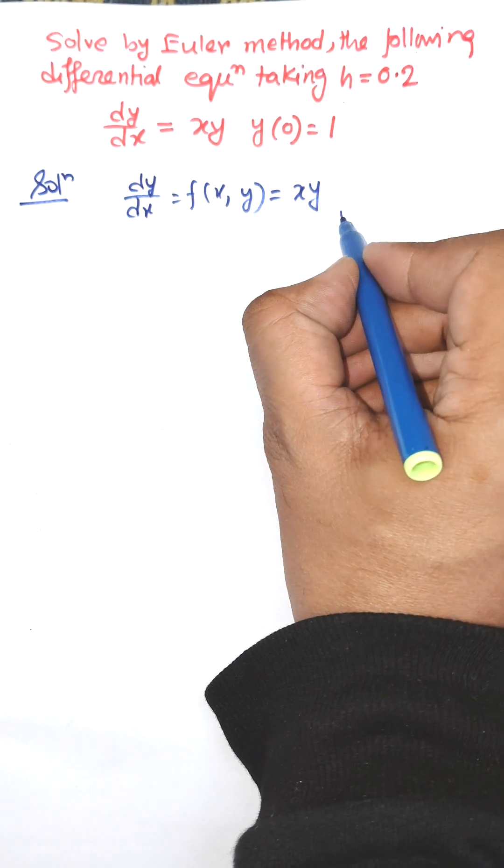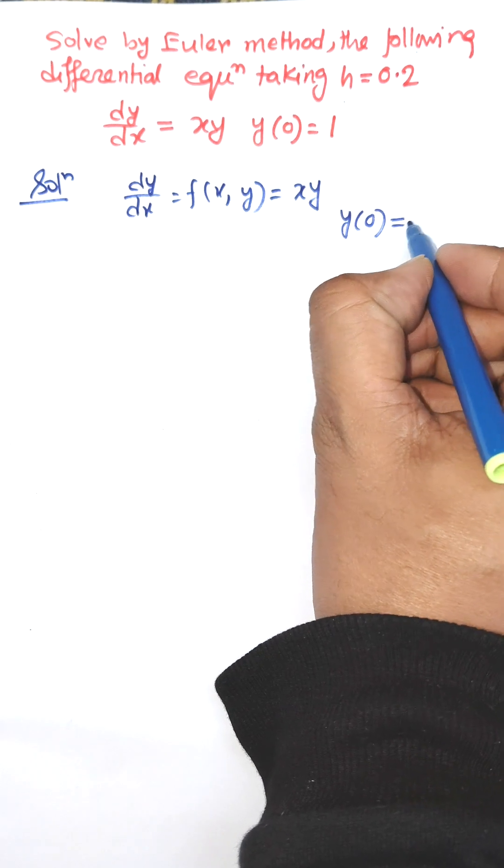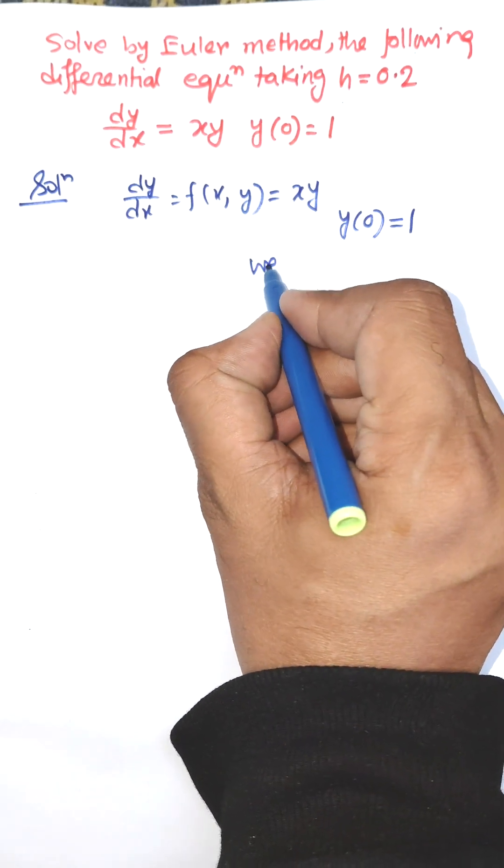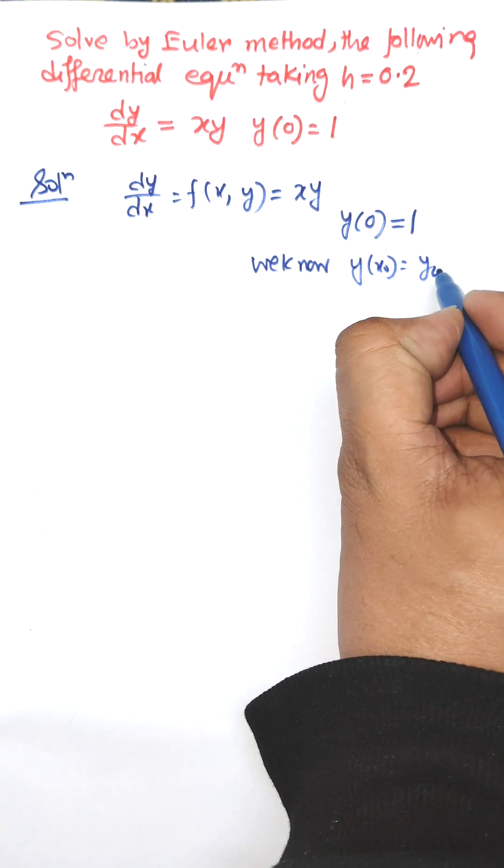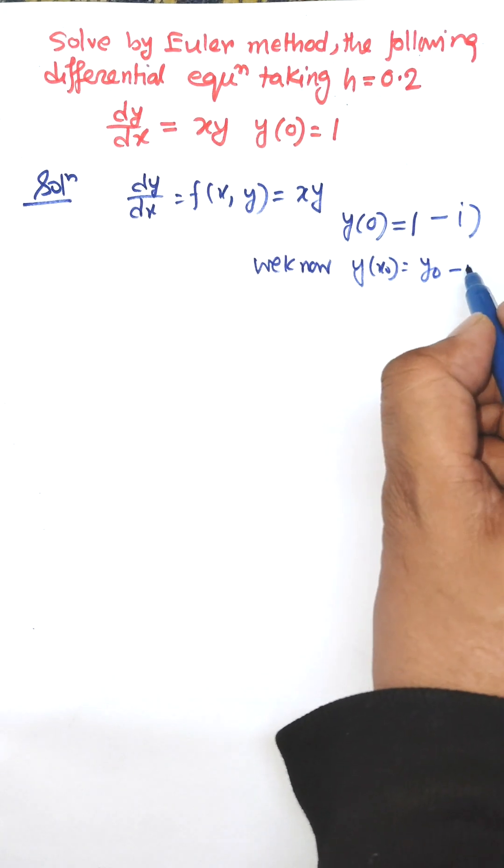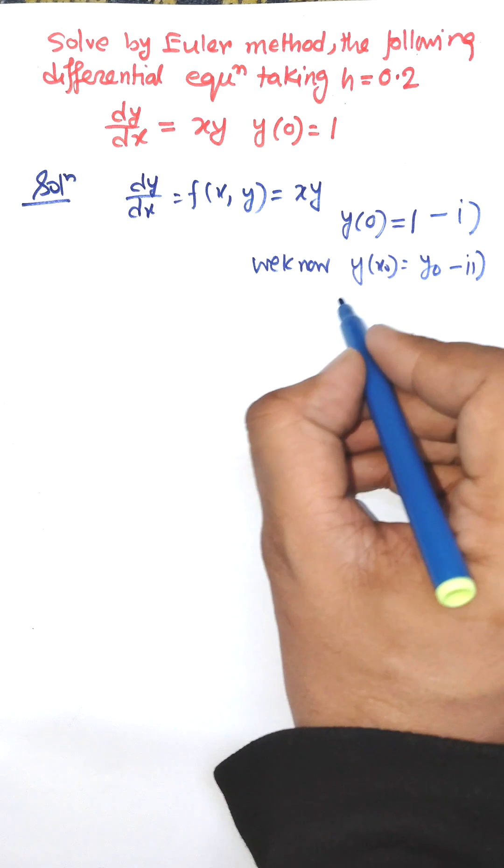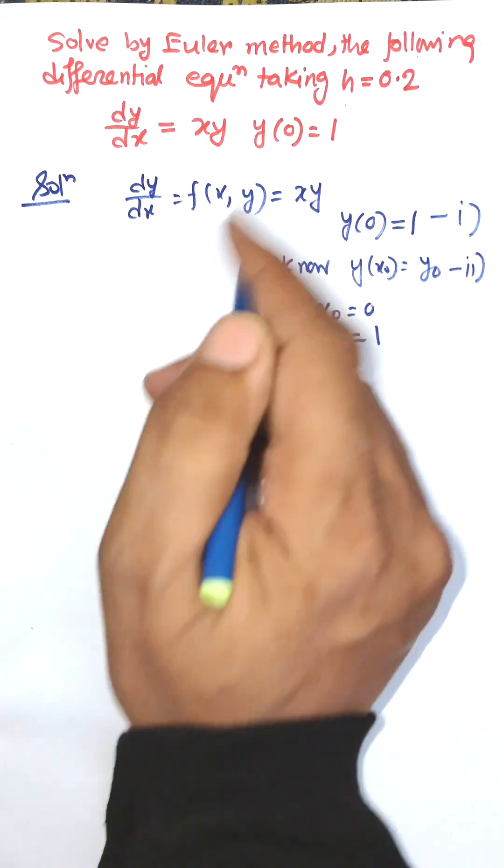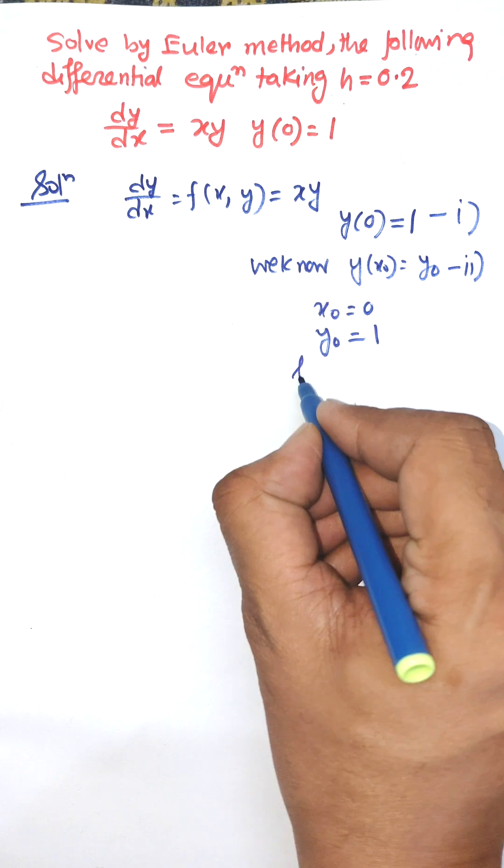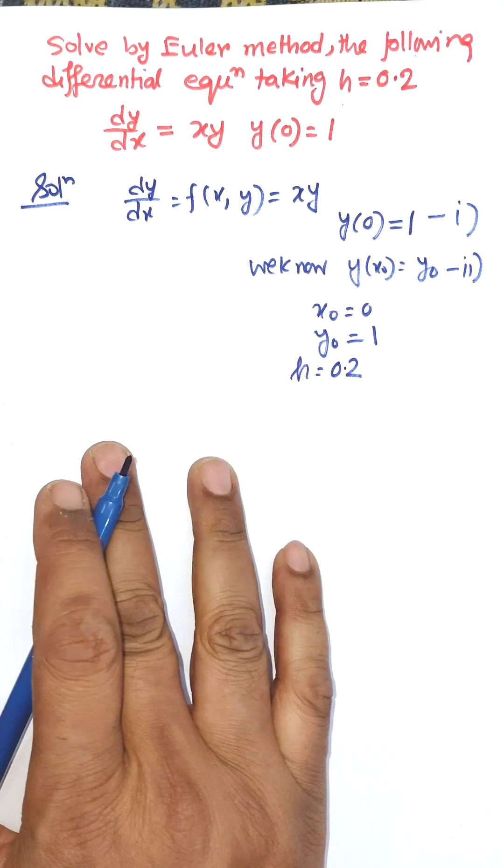Here, dy/dx = f(x,y) = xy is given. Initially y(0) = 1, we know y(x0) = y0. So, comparing these, x0 = 0 and y0 = 1. Here, h is given, h = 0.2 is given.